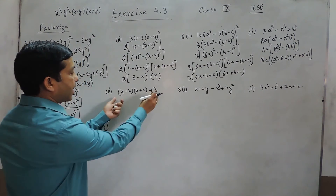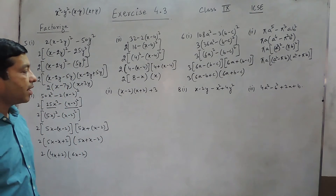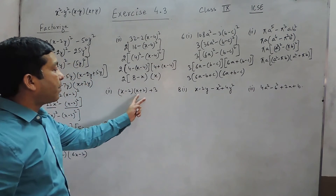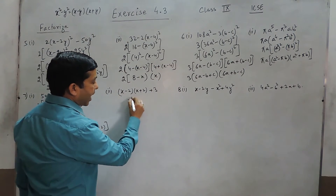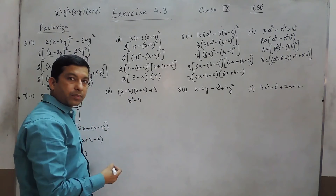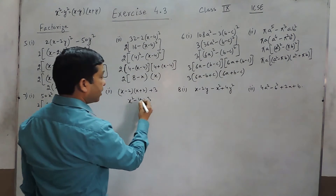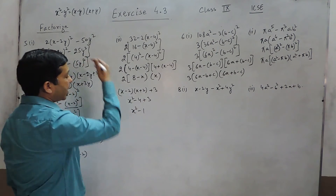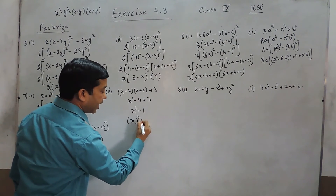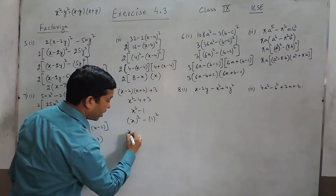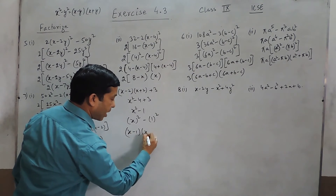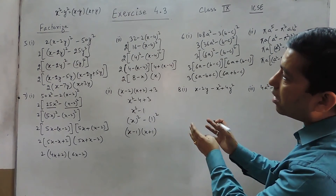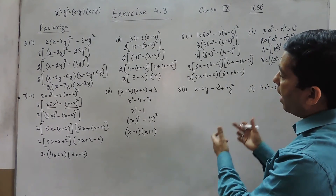In this kind of question where there are two terms which are neither perfect squares, it is always better to solve it first. Using the identity, (x - 2)(x + 2) becomes x² - 4. Then adding the existing +3, it becomes x² - 1. Again this fits the identity: x² - 1² = (x - 1)(x + 1).